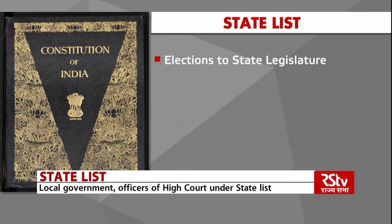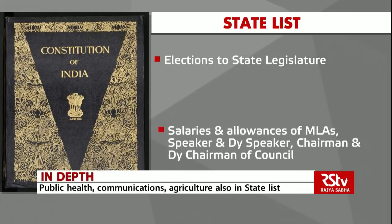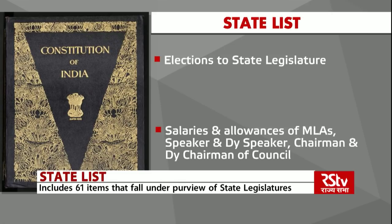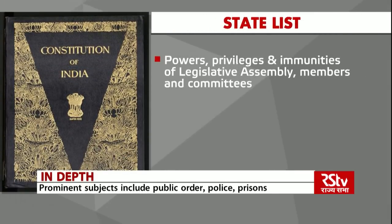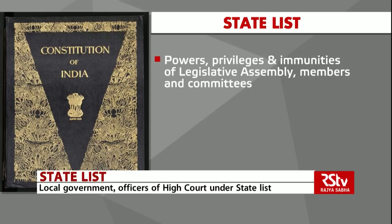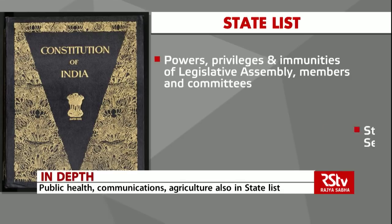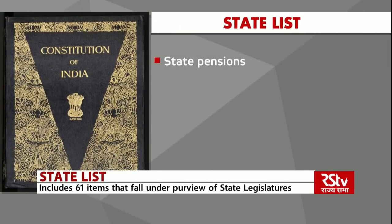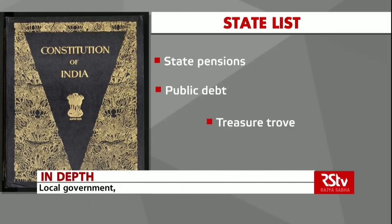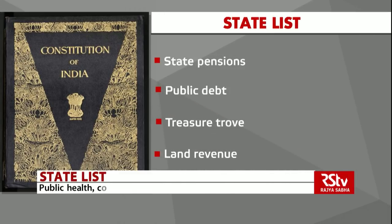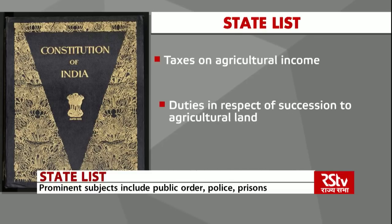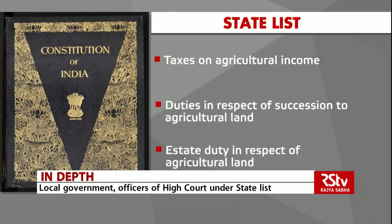Elections to the legislature of the state subject to the provisions of any law made by Parliament. Salaries and allowances of members of the legislature of the state, of the Speaker and Deputy Speaker of the legislative assembly, and if there is a legislative council, of the Chairman and Deputy Chairman of the council. Powers, privileges and immunities of the legislative assembly and of the members and the committees. State public services and the state public service commission. State pensions including pensions payable by the state or out of the consolidated fund of the state. Public debt of the state. Treasure trove. Land revenue, including the assessment and collection of revenue, the maintenance of land records, survey for revenue purposes and records of rights and alienation of revenues. Taxes on agricultural income. Duties in respect of succession to agricultural land. Estate duty in respect of agricultural land.